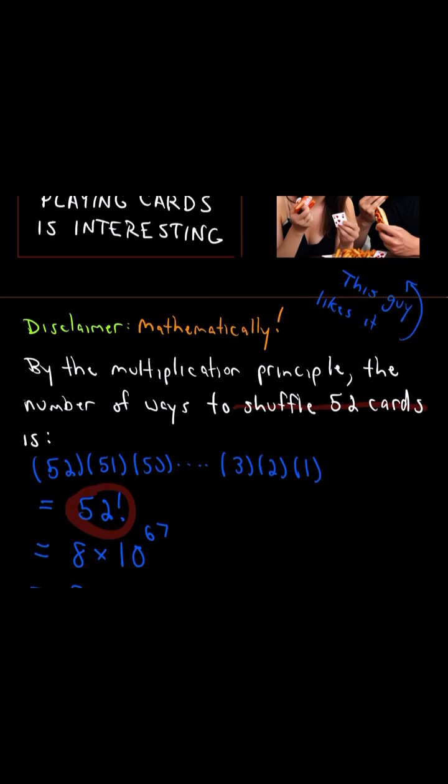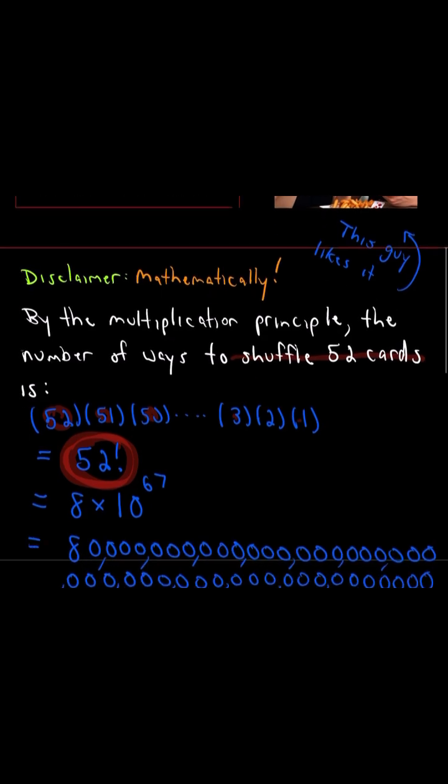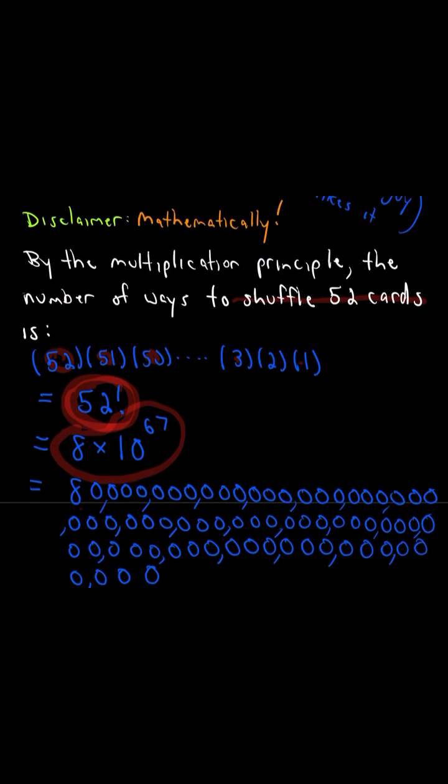And the number of ways we would get 52 times 51 times 50 down to 3 times 2 times 1. We would hit every number in between. And that's the same thing as 52 factorial, but if you expand that out, that's actually 8 times 10 to the 67th power, which is an 8 with 67 zeros after it.